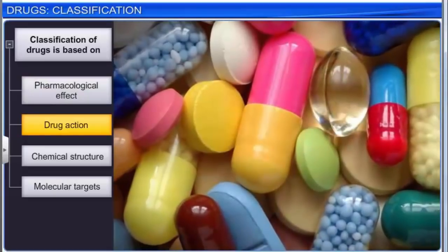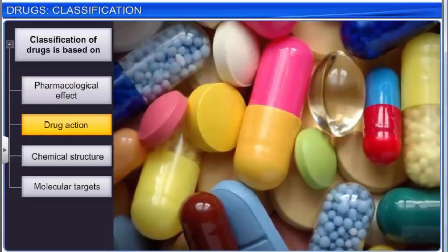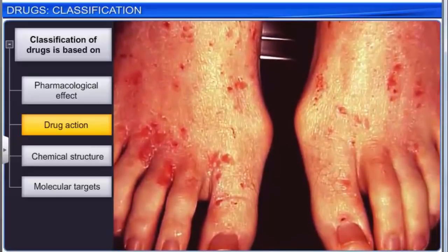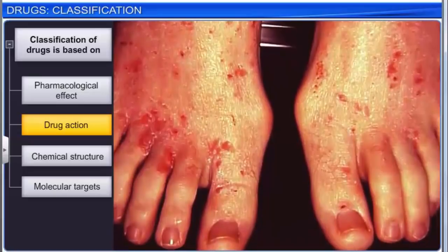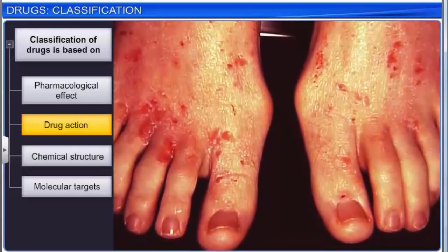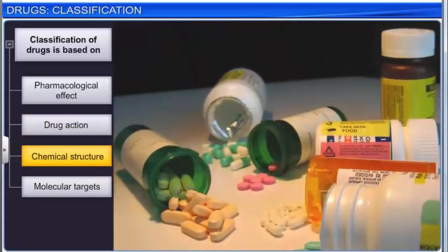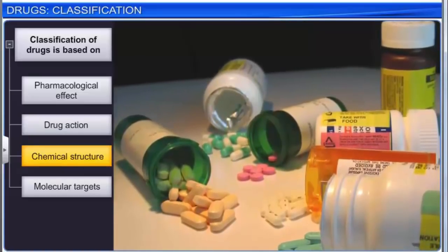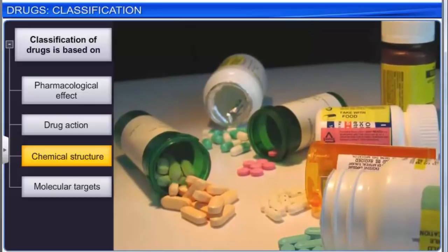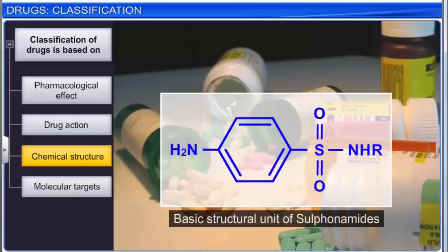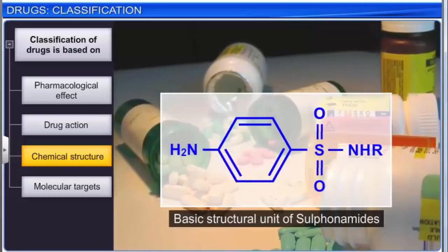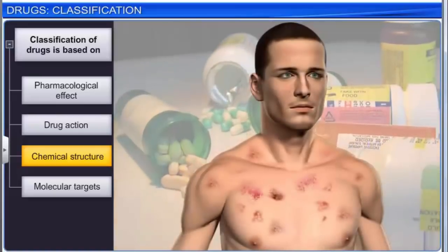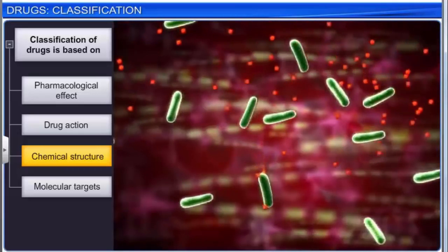Drugs can also be classified on the basis of their action on a particular biochemical process. For example, antihistamines inhibit the action of the inflammation-causing compound histamine. Drugs classified according to their chemical structure share common structural features and often have similar pharmacological activity. For example, all sulfonamides have a common structural feature. Sulfonamides are antibacterial drugs used to treat bacterial infections.